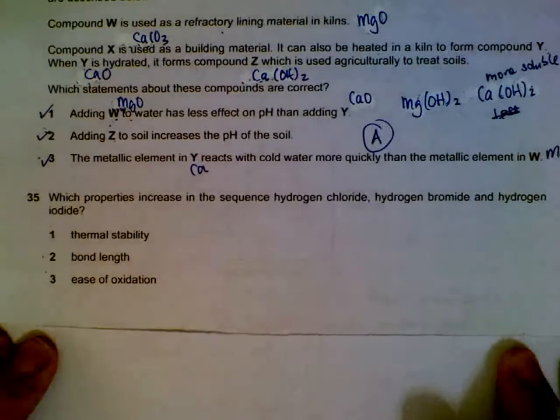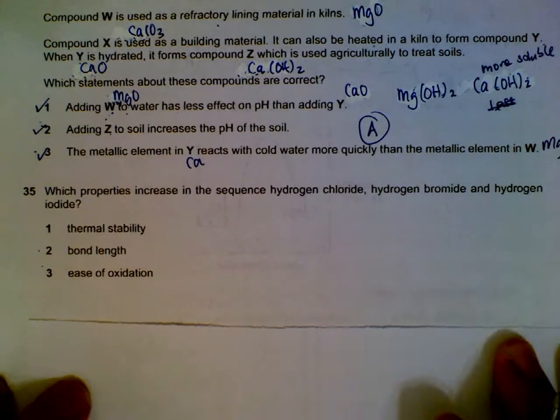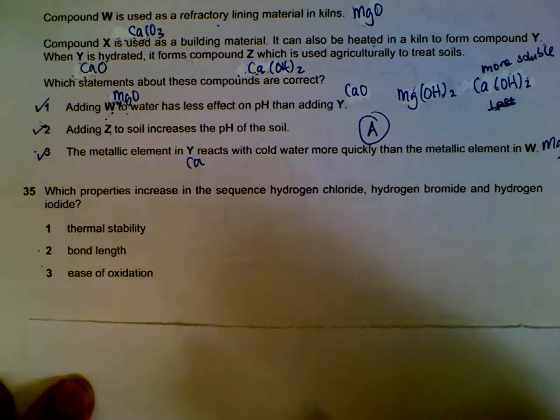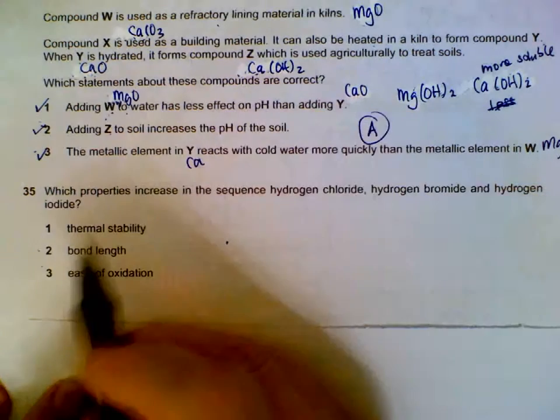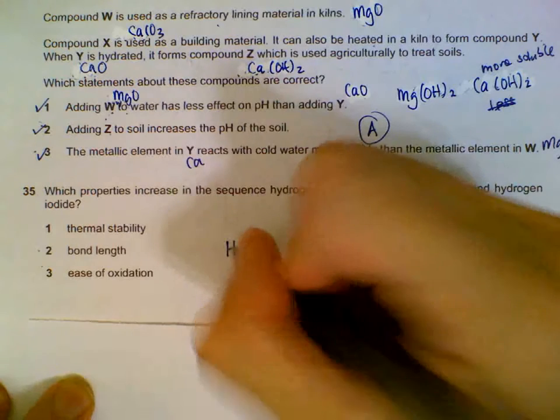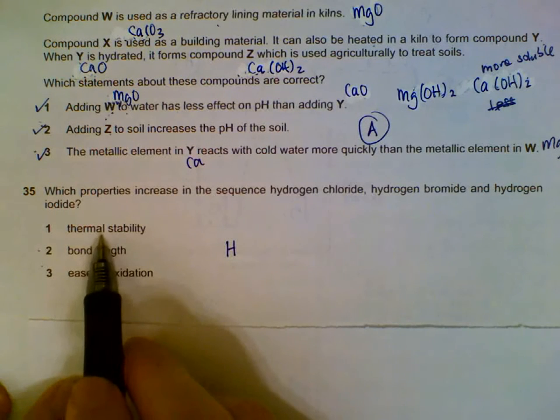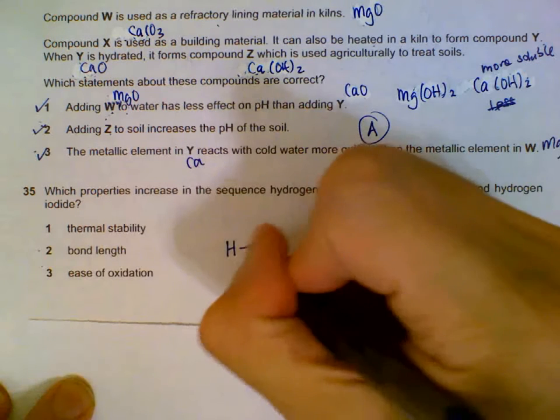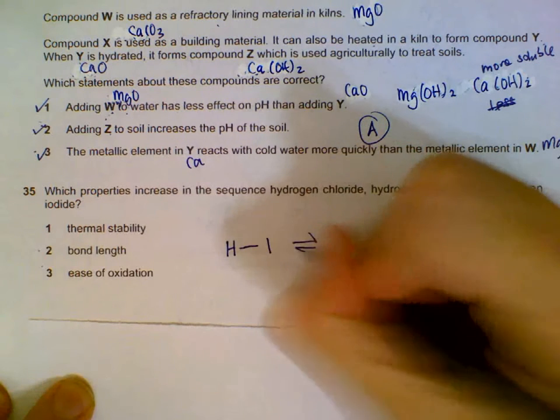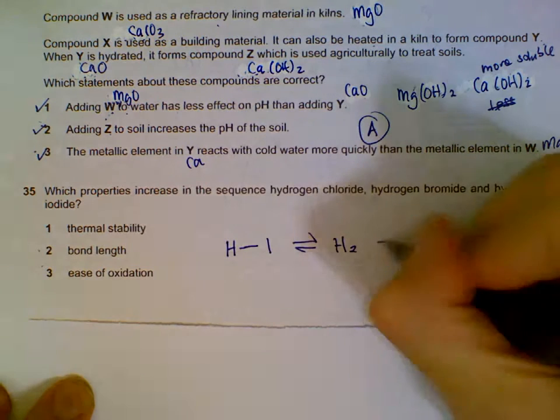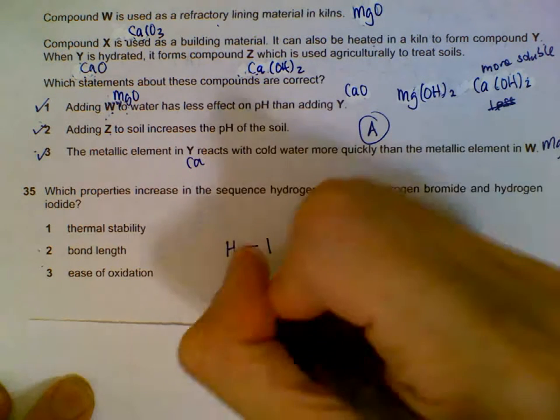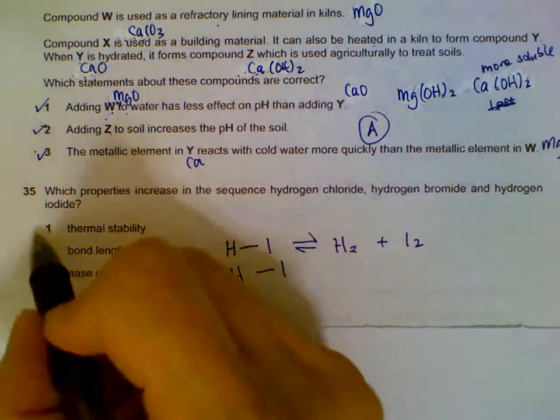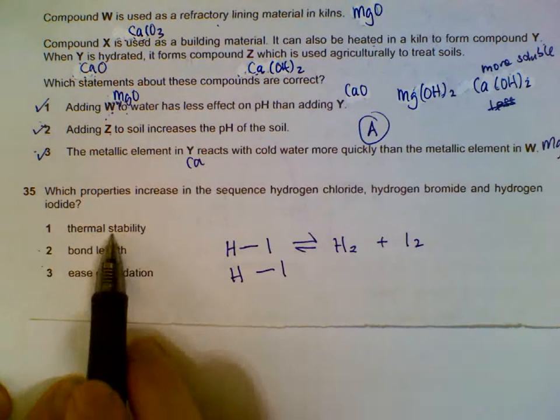Hydrogen chloride, hydrogen bromide, hydrogen iodide - which one increases in properties? Stability. Thermal stability actually decreases. It's easier to decompose hydrogen iodide back into hydrogen gas and iodine gas. So thermal stability actually decreases.